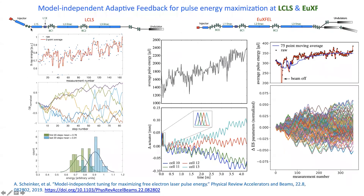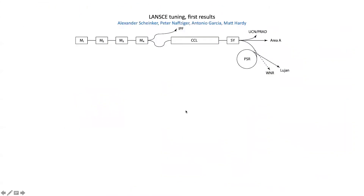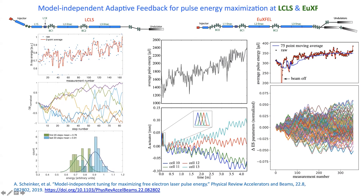We've also applied this at LCLS, tuning six LINAC parameters to maximize the X-ray energy coming out of the FEL — a stochastic, very noisy process — and still increasing it by adjusting all parameters simultaneously. At the European XFEL, in four minutes we more than doubled the average pulse energy, tuning four magnets in undulator sections. We also ran it with 125 parameters — many magnets in different sections of the undulator — and slowly increased the average pulse energy. You can handle many parameters simultaneously for time-varying systems.